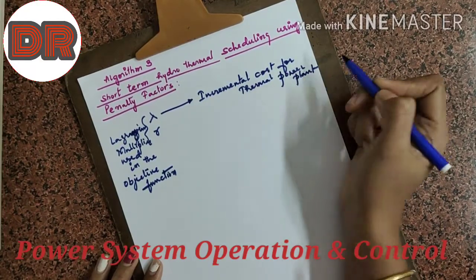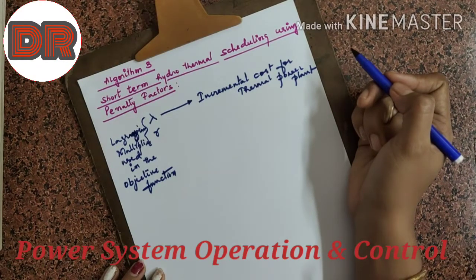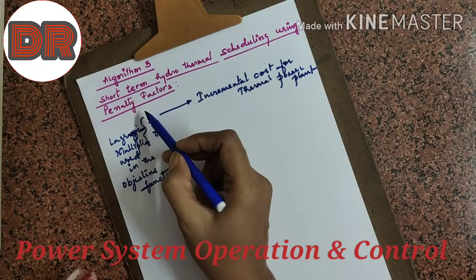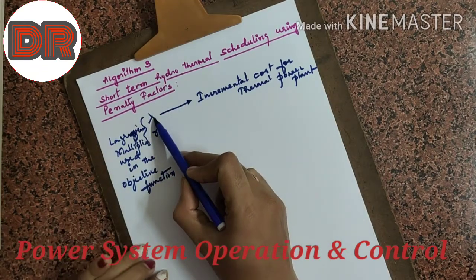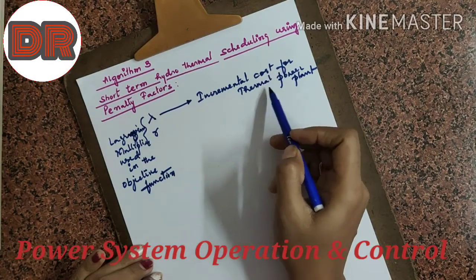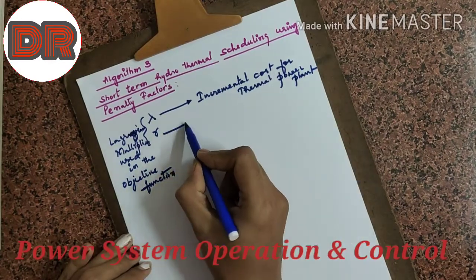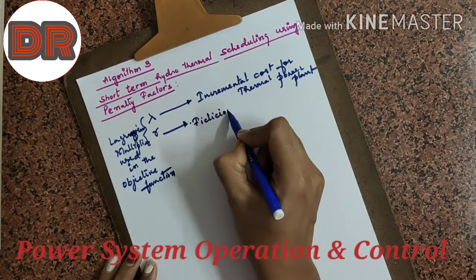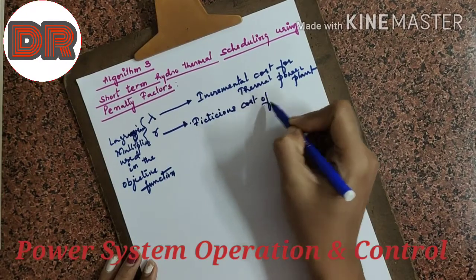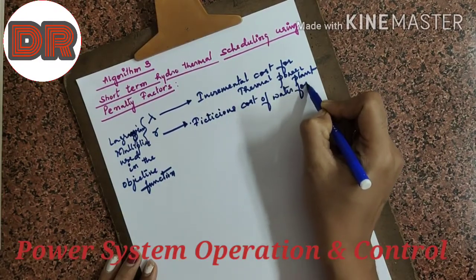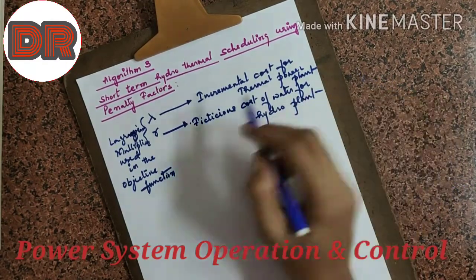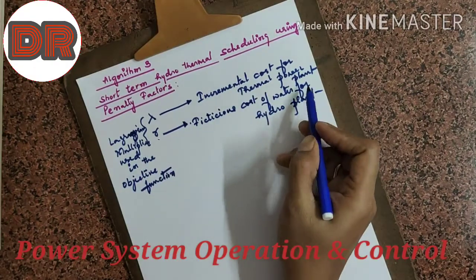In the Power System Analysis 2 course, we have seen the scheduling of thermal power plants where lambda is used, and the same term is used in the previous algorithms also — lambda is nothing but the incremental cost for the thermal power plant. This gamma is actually a fictitious cost of water for the hydro plant.